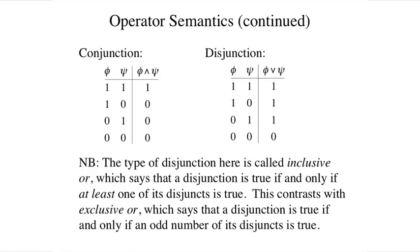The type of disjunction here is called inclusive or, which says that a disjunction is true if at least one of its disjuncts is true. This contrasts with exclusive or, which says that a disjunction is true if only an odd number of its disjuncts is true.